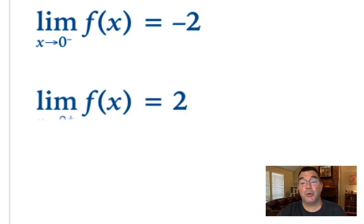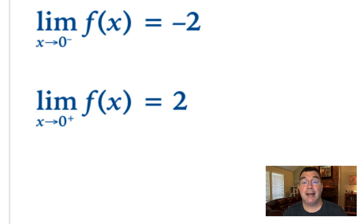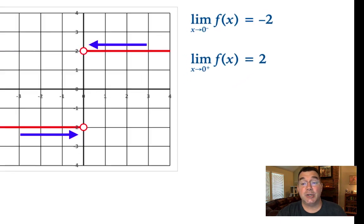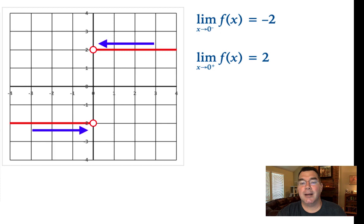As I approach from the right — notice the similar notation with that little plus sign — that means I'm using x values that are slightly bigger than 0. So as I approach x equals 0 from the right, the y values are consistently 2. Since I'm getting two different y values approaching from the left and from the right, the limit does not exist.